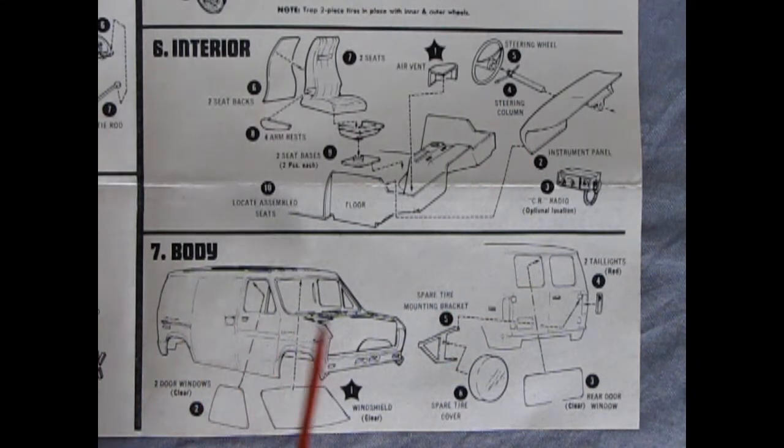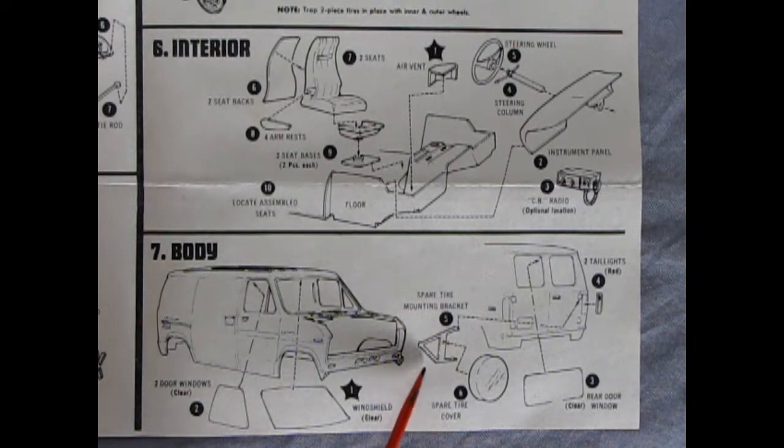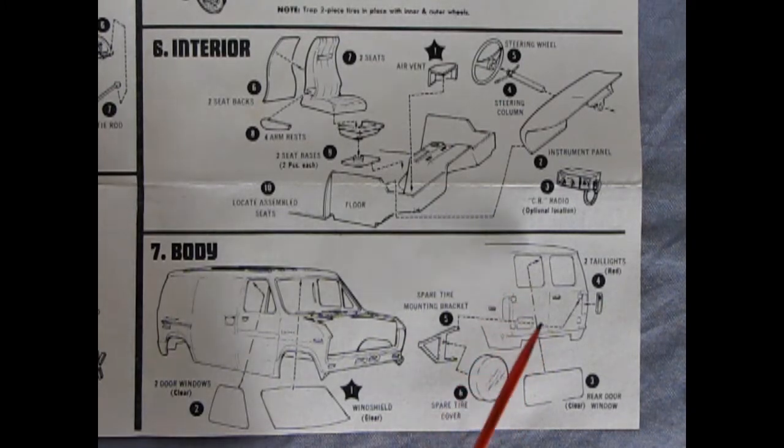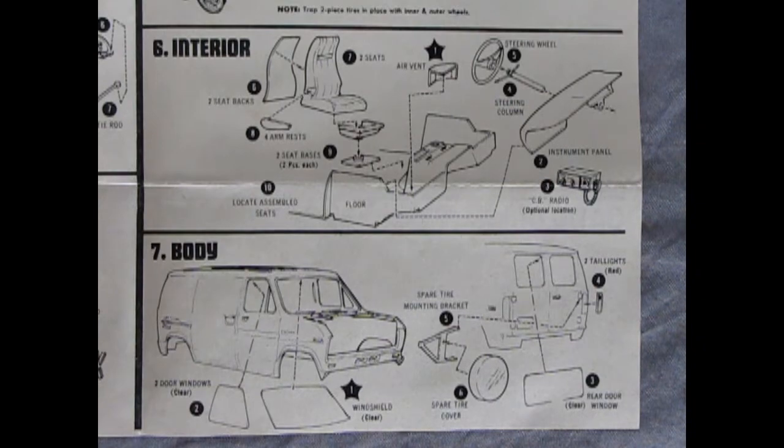Then we get into panel 7 down here with our body showing our glass going in from behind and then we've got a nice spare tire mounting bracket here. Our spare tire, our rear clear window going into the back of the body as well as our red tail lights.